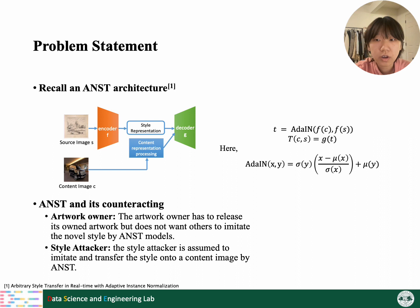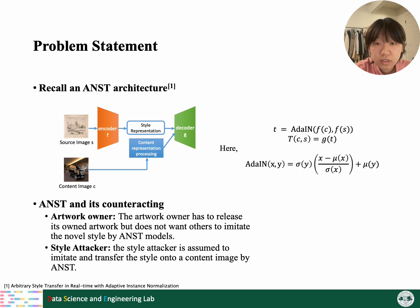With the goal of protecting the copyright of artists, we try to propose a countermeasure for ANST. To achieve this goal, we first recall the ANST architecture. A common architecture contains an encoder F and a decoder G. The encoder derives the style extractor and the decoder maps the adjusted style representation back into the input image space and generates output. The style representation of the content image, which is fc, is normalized by the mean and variance of the source style image representation, which is fs. And then the adjusted representation t will be sent to the decoder to get the final transferred image.